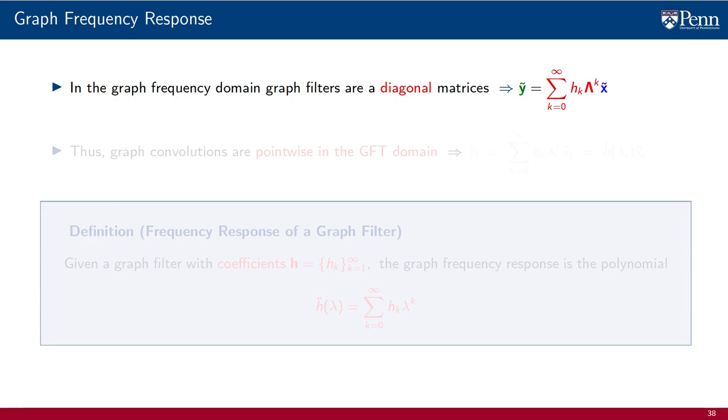Since lambda is a diagonal matrix, we have just proven that filters are diagonal in the GFT domain. Having a diagonal relationship between the graph Fourier transforms and the input and output of a graph filter implies that graph convolutions are pointwise operations in the GFT domain.